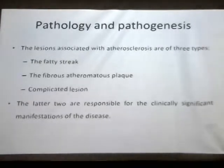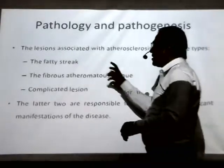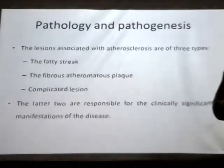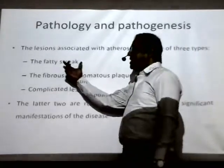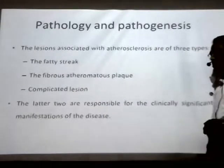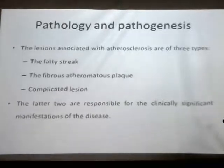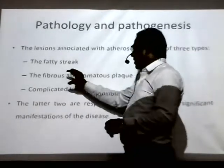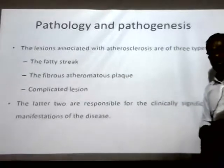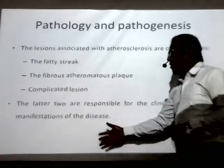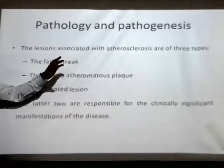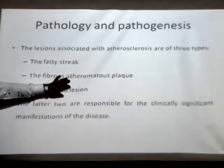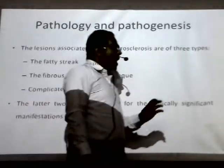The pathology and pathogenesis of atherosclerosis can be understood by three terms or stages. The first one is known as the fatty streak, the second is the fibrous atheromatous plaque, and the third is the complicated lesion. The later two — fibrous atheromatous plaque and complicated lesion — are responsible for the clinical manifestation or symptoms associated with atherosclerosis.